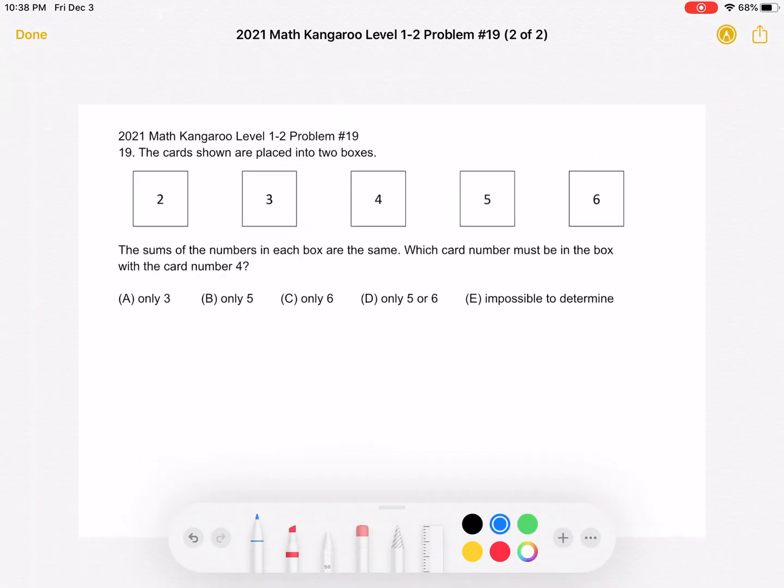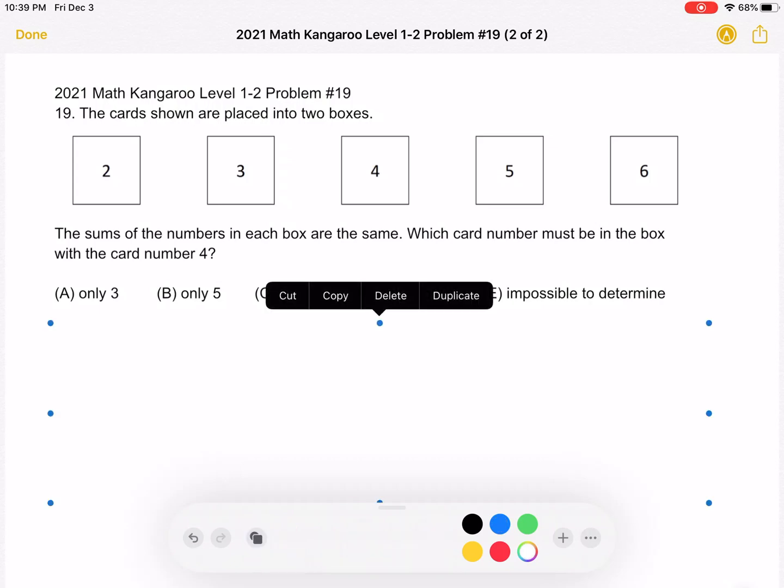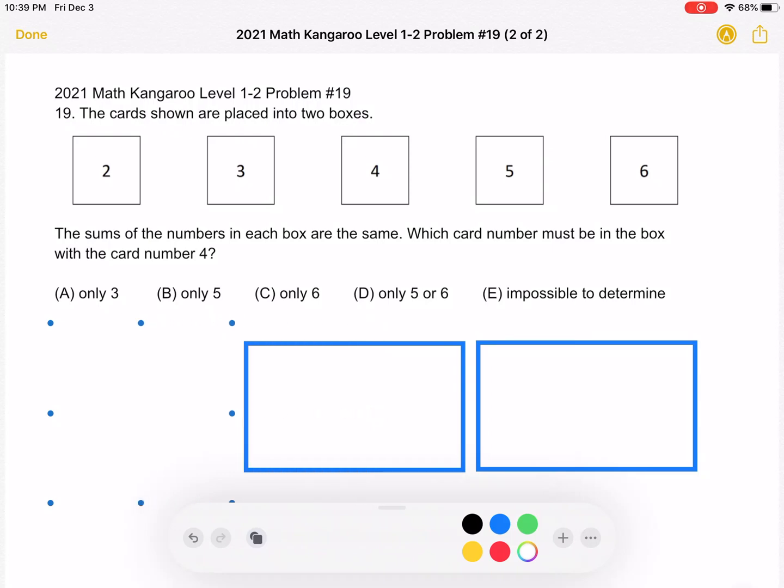And here is where we'll be doing the solution. So, to start, we have two boxes, as shown here, that we're going to be splitting the above cards into.